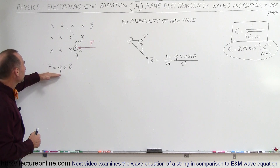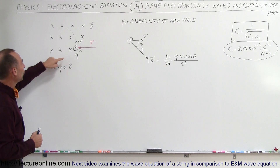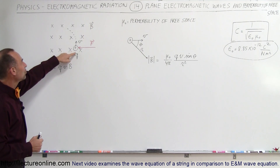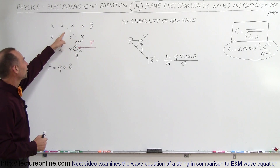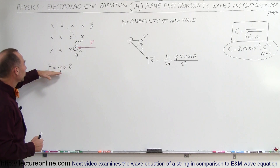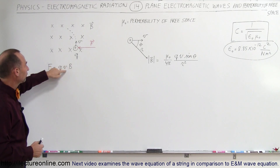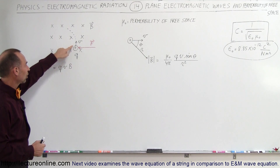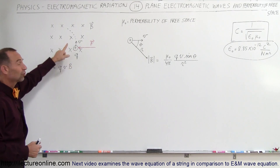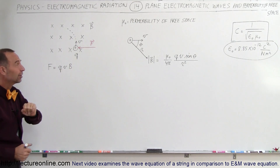This equation describes the force on a charge moving through a magnetic field. It is equal to QVB, where Q is the charge, V is the velocity of the charge, and B is the strength of the magnetic field.